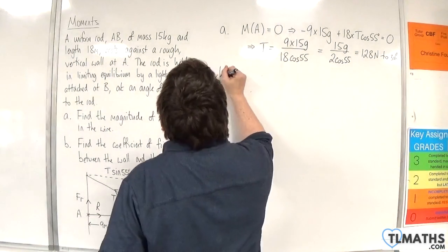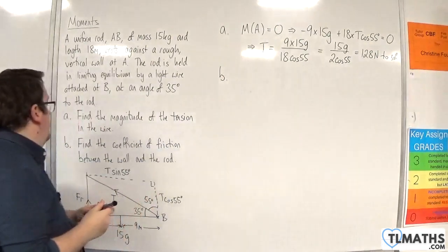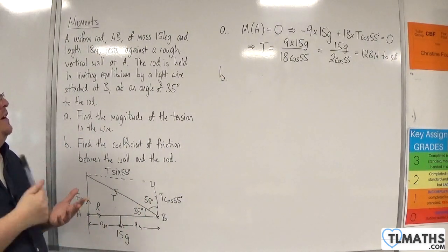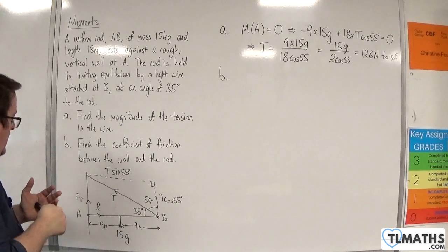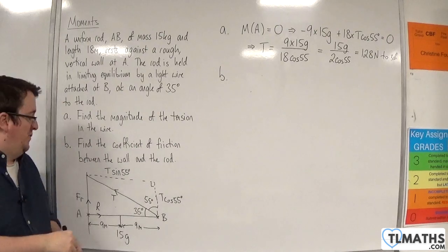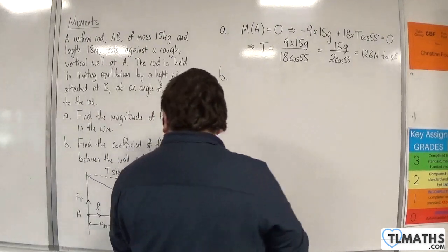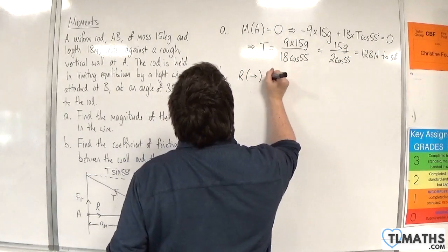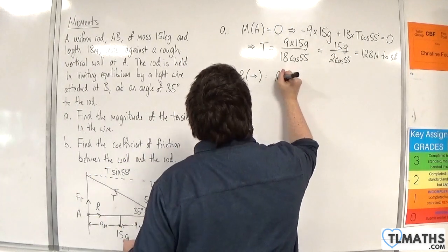Part B: Find the coefficient of friction between the wall and the rod. Now that I know T, I can resolve vertically and horizontally. If I resolve horizontally first, I'll take to the right as positive. I've got R.